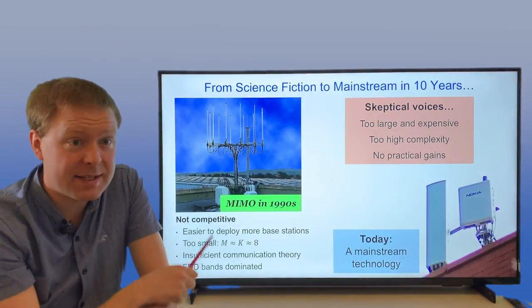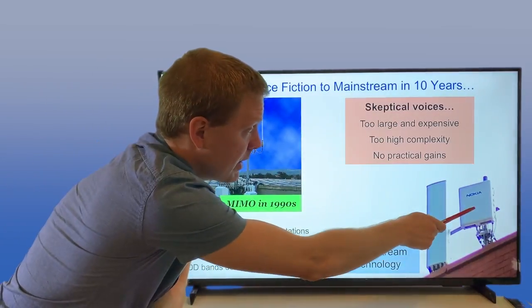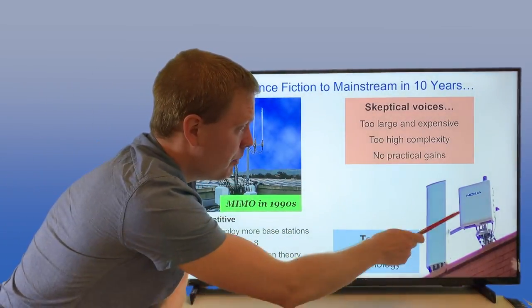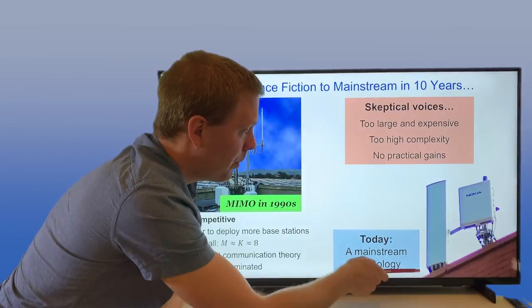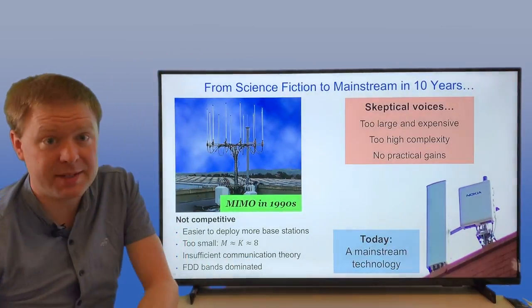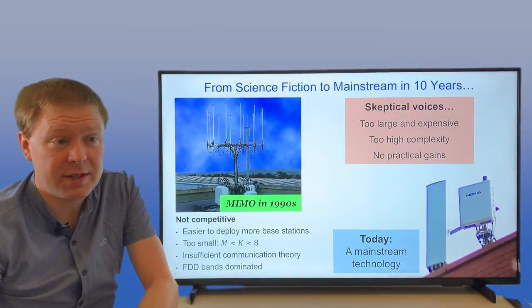But today, it is a mainstream technology. Here you can see a Nokia 64 antenna Massive MIMO radio, and you can compare it with a traditional radio on the left hand side. The size is not very large in difference.